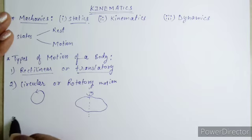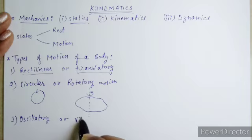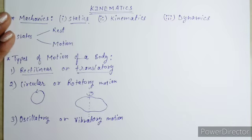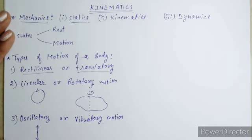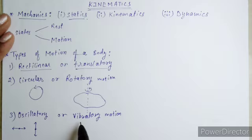The third one is Oscillatory or Vibratory motion. Oscillatory motion is that motion in which a body moves to and fro, or back and forth, repeatedly about a fixed point called the mean position in a definite interval of time. If in oscillatory motion the amplitude is very small, it is said to be vibratory motion.